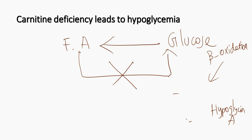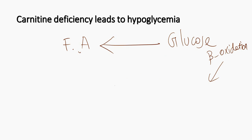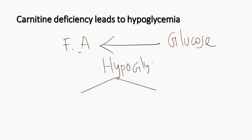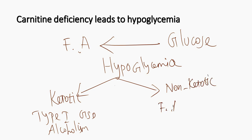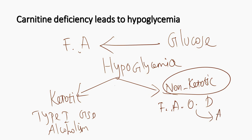What kind of hypoglycemia — ketotic or non-ketotic? This is also important for entrance exams. Hypoglycemia can be ketotic or non-ketotic. Ketotic hypoglycemia can be seen in type 1 glycogen storage disease (Von Gierke disease) and in alcoholism. In fatty acid oxidation defects, you will see non-ketotic hypoglycemia. Why? Ketone bodies are produced from acetyl-CoA, and this acetyl-CoA comes from oxidation of fatty acids. If fatty acids cannot be oxidized, you cannot get acetyl-CoA, and therefore you cannot get ketone bodies. That is why in fatty acid oxidation defects, you will see non-ketotic hypoglycemia.